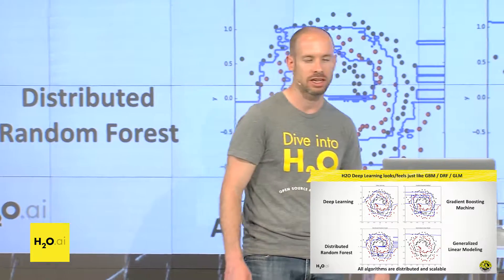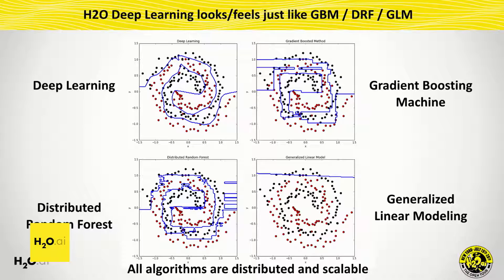What I showed yesterday in the demo — this is just a quick illustration for a spiral dataset. You have two intertwined spirals, one black, one red, with some noisy data from this distribution. The deep learning model makes a nice round contour. Gradient boosting and Random Forest cut up the space into square, locally straight lines, but with enough trees you can make it round as well. The GLM has no chance because it just makes a straight line and cannot separate the two spirals. Deep learning learns nonlinear interactions between x and y — it can memorize a spiral.